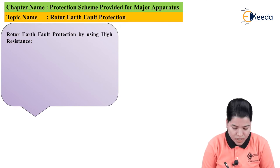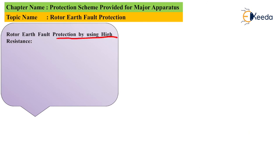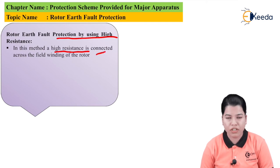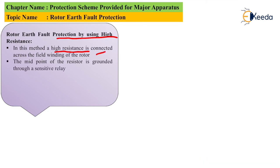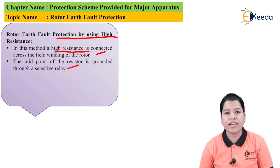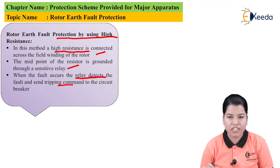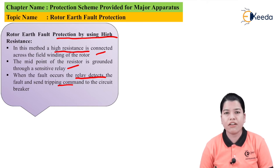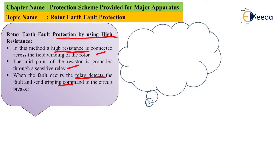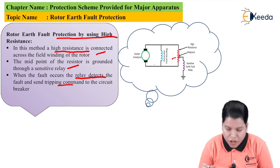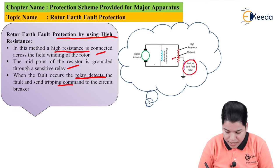Our first method is rotor earth fault protection by using high resistance. In this method, a high resistance is connected across the field winding of the rotor. The midpoint of this resistor is grounded through a sensitive relay. When a fault occurs, the relay detects the fault and sends a tripping command to the circuit breaker. The figure shows the arrangement of the high resistance for rotor earth fault protection, where the midpoint of the resistance is grounded through a sensitive earth fault relay.